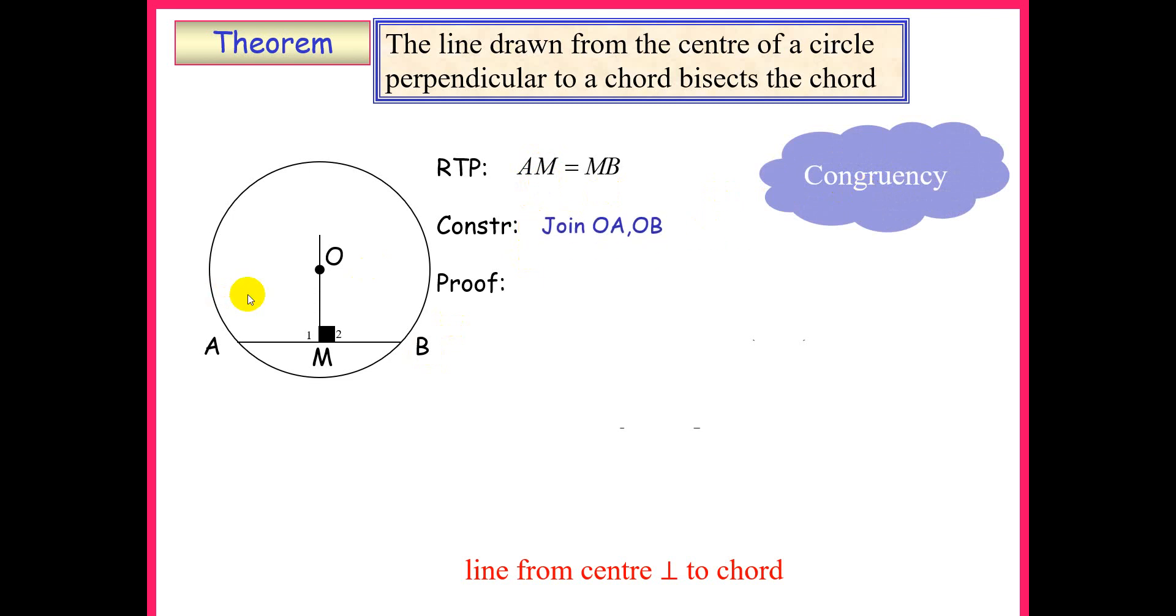So I'm going to join OA and OB and you'll notice I have two triangles and I'm now going to prove the two triangles congruent.